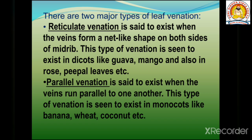The second type is parallel venation. Parallel venation exists when the veins run parallel to one another. This type of venation is seen in monocots like banana, wheat, and coconut.